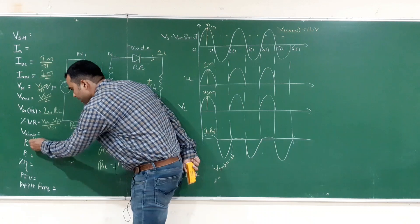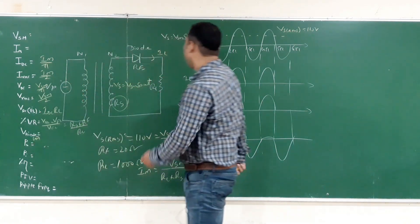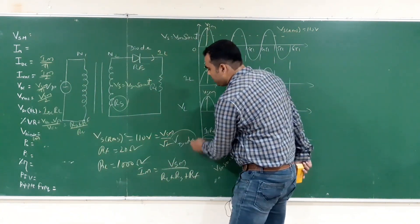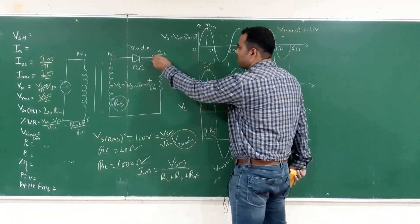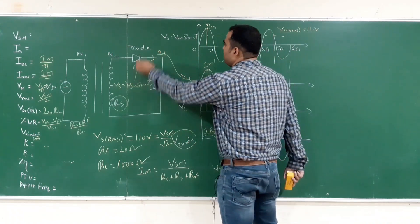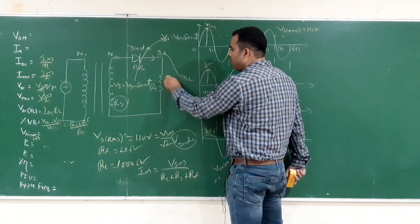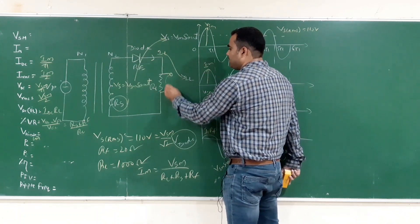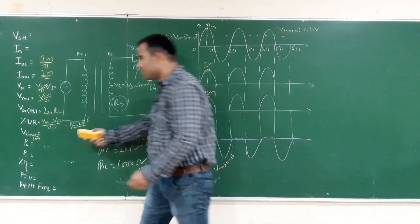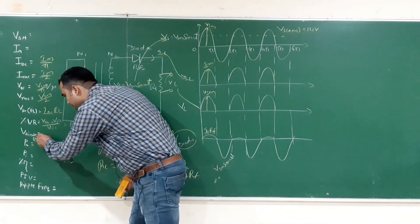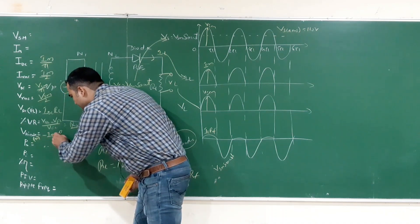Next, V diode. We have to calculate its DC value. V diode waveform is the voltage across the diode. In this, the current flowing, the waveform of supply voltage, and the voltage across the load VL, this is its waveform. For this waveform, we have to calculate the DC value which is minus IDC RL.